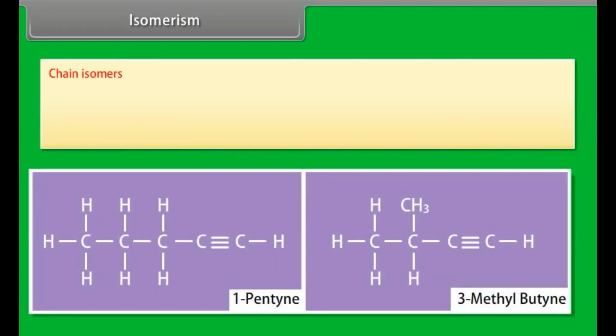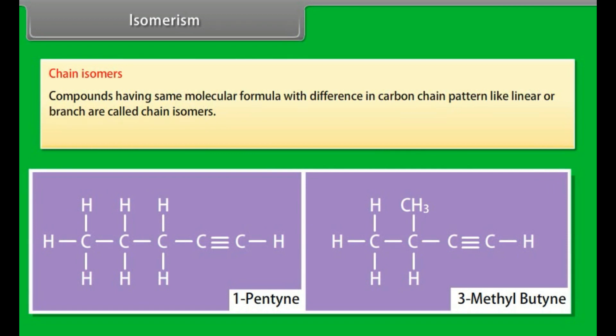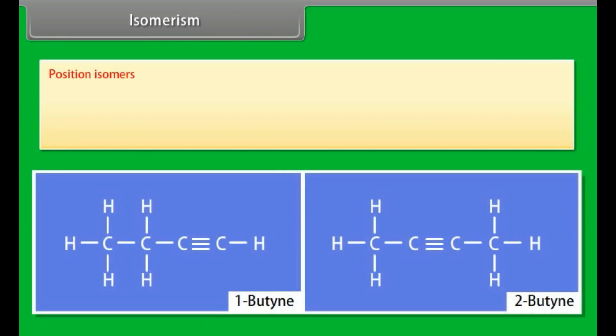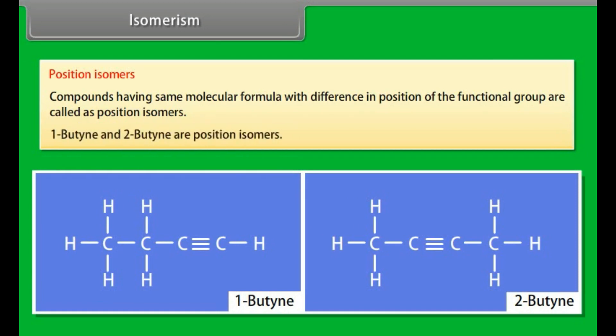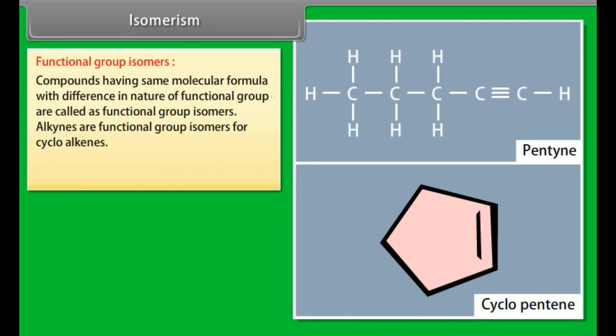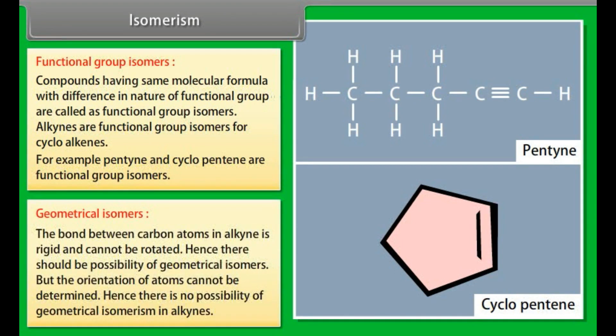Isomerism. Chain isomers. Compounds having same molecular formula with difference in carbon chain pattern like linear or branch are called chain isomers. 1-pentyne is chain isomer of 3-methylbutyne. Position isomers. Compounds having same molecular formula with difference in position of the functional group are called as position isomers. 1-pentyne and 2-pentyne are position isomers. Functional group isomers. Compounds having same molecular formula with difference in nature of functional group are called as functional group isomers. Alkynes are functional group isomers for cycloalkenes. For example, pentyne and cyclopentene are functional group isomers. Geometrical isomers. The bond between carbon atoms in alkynes is rigid and cannot be rotated. Hence there should be possibility of geometrical isomers. But the orientation of atoms cannot be determined. Hence there is no possibility of geometrical isomerism in alkynes.